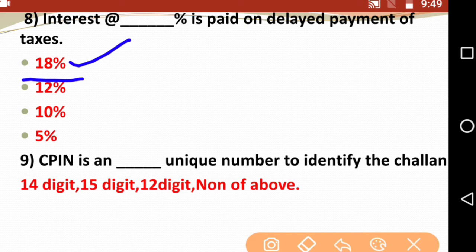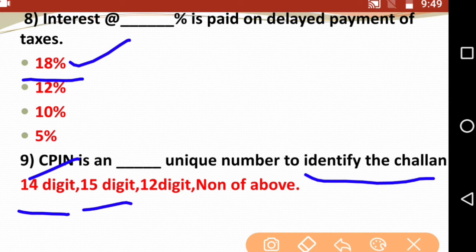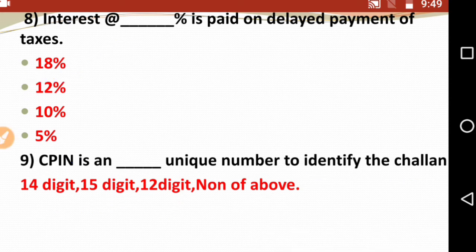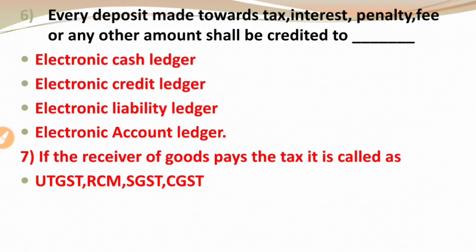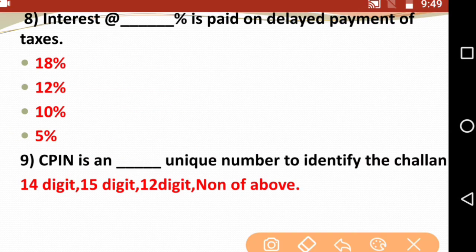Question nine: CPIN — Common Portal Identification Number — is a dash unique number to identify the challan. How many digits does it have? The options are 14 digits, 15 digits, 12 digits, or none of the above. CPIN is a unique number to identify the challan, and it is 14 digits long.